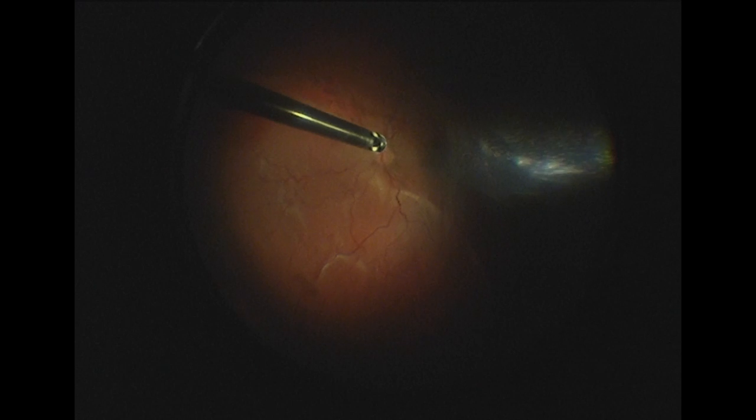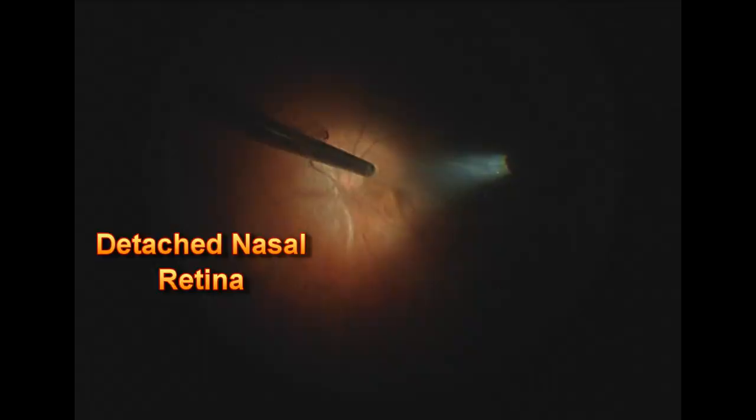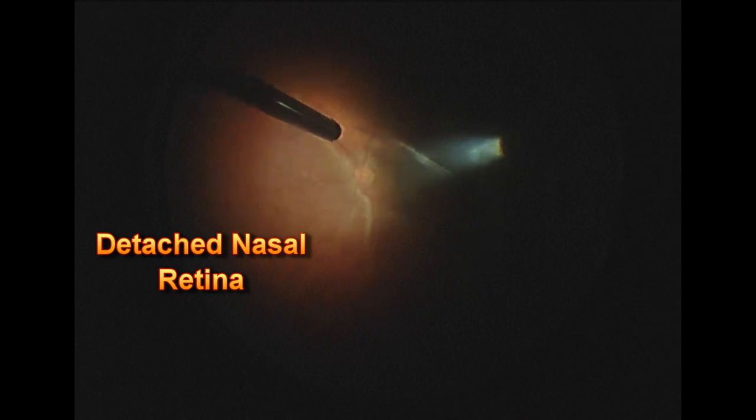In this image you can see the retinal detachment on the left bottom part of the screen where the retina looks a little bit lumpy. The milky substance inside the eye is the vitreous. As you can see from the red substance in the vitreous, this patient also had some blood in the eye.